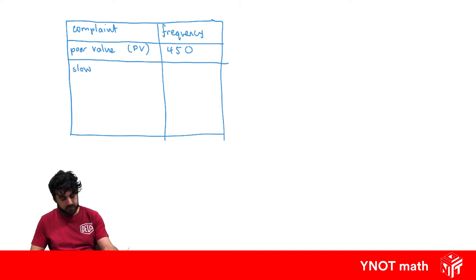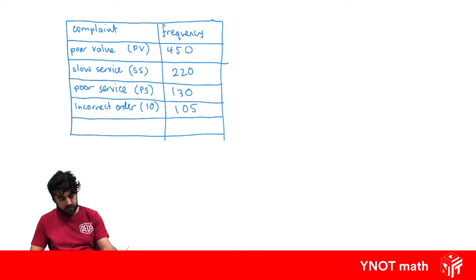Let's go slow service, and one thing when we're looking at the data for the Pareto chart, we need them to be in descending order, highest to largest. So we're going 220. Next one was poor customer service, we'll just say poor service, 130. Incorrect order, 105, and poor Wi-Fi, 95.